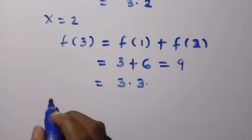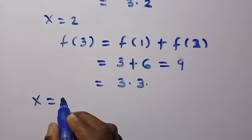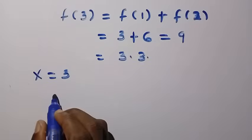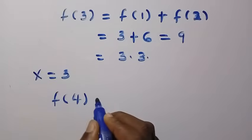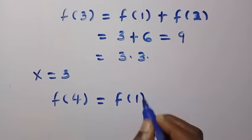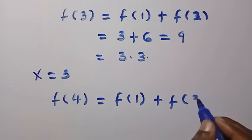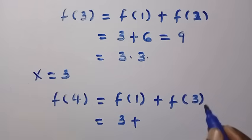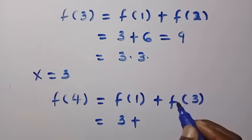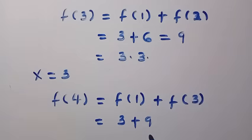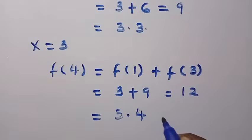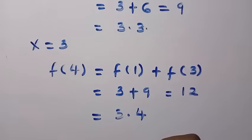For x = 3, we get f(4) = f(1) + f(3). Since f(1) = 3 and f(3) = 9, we have f(4) = 3 + 9 = 12. And 12 can be written as 3 multiplied by 4.